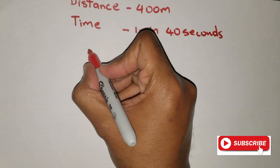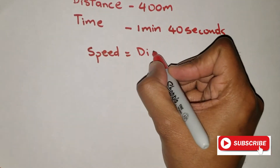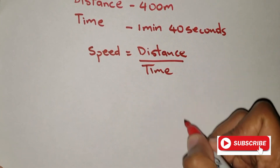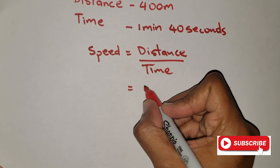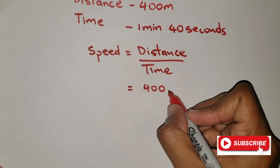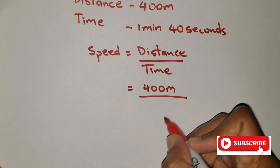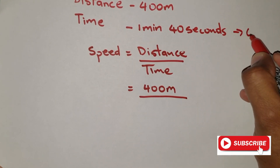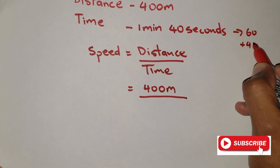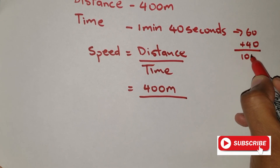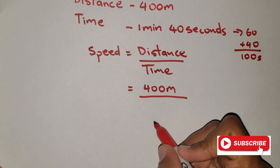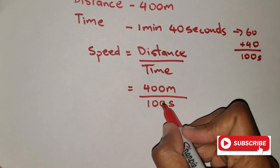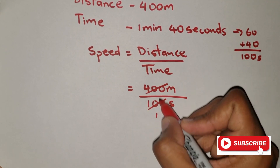We need to write the formula for speed. Speed is simply distance divided by time. All we have to do now is substitute the values, so that's 400 meters divided by the time. However, the time is one minute and 40 seconds, so we need to convert everything to seconds. There are 60 seconds in one minute, so I'm gonna add 40 to 60, which gives me 100 seconds.